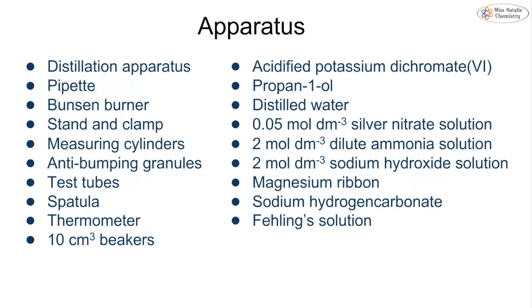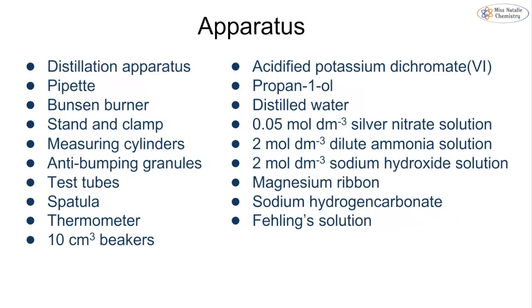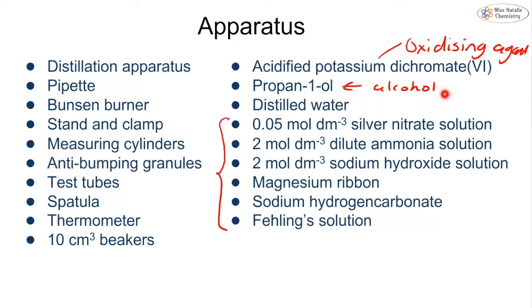Looking at the apparatus, we're going to need a number of different chemicals as well as lab equipment. We'll be using distillation apparatus, Bunsen burners, measuring cylinders, anti-bumping granules, beakers, thermometers, and our oxidizing agent which is potassium dichromate. We'll also have our alcohol and chemicals for chemical tests.